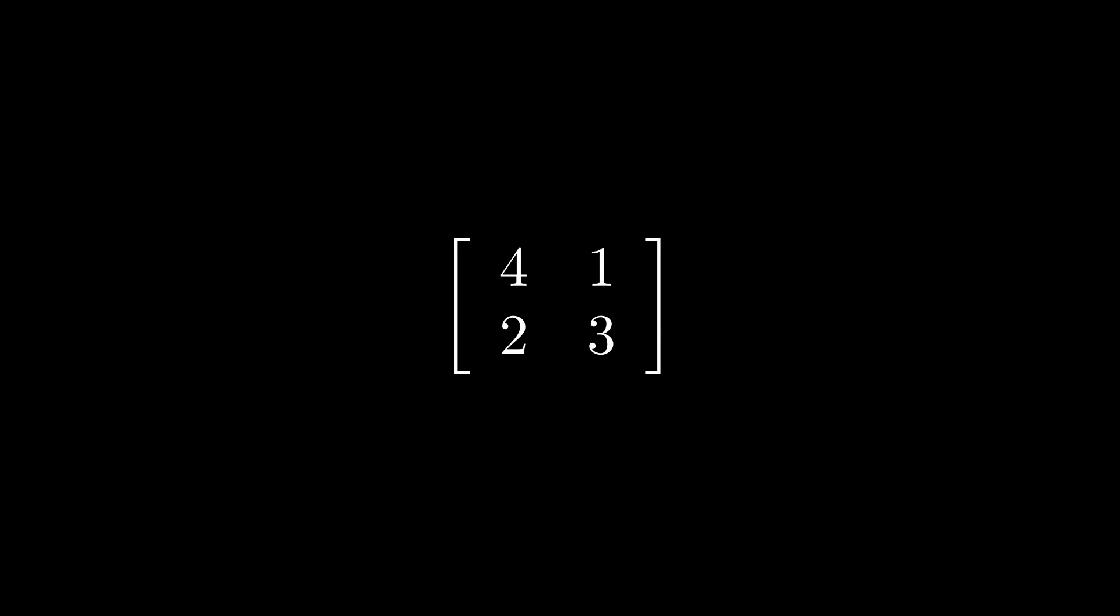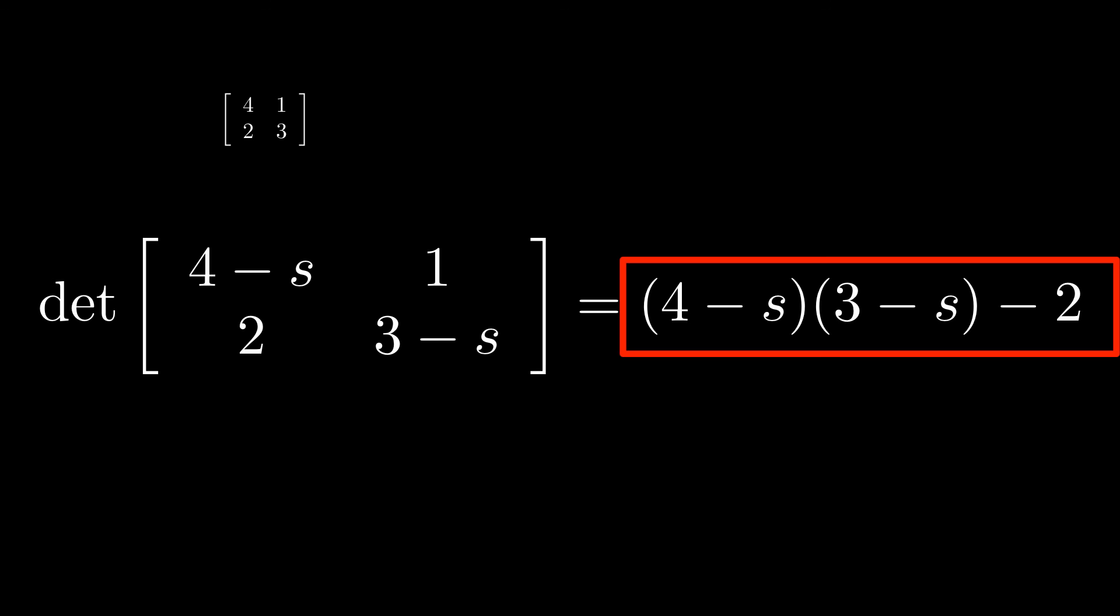For this next problem, we need to calculate the eigenvalues of this 2 by 2 matrix. The first step in doing this is to subtract s off of the diagonal, and then take the determinant. The result of this is known as the characteristic polynomial.